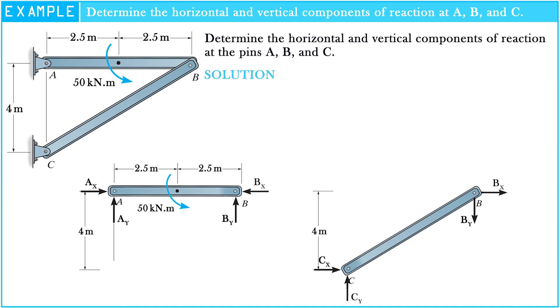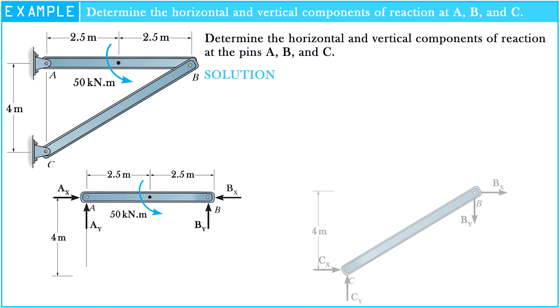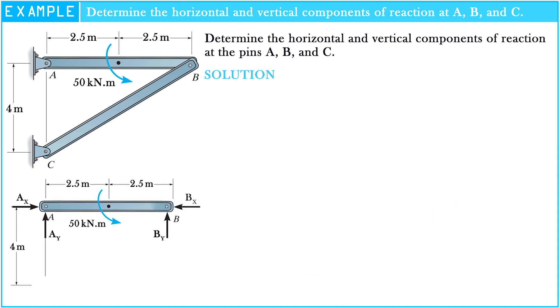Consider the free body diagram of segment AB as shown in the figure. There are four unknowns in this segment. So let's write the equations of equilibrium about A and B respectively. The sum of forces along the x-axis equals zero. So,